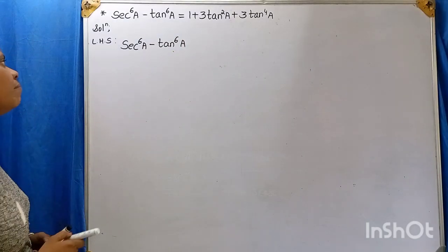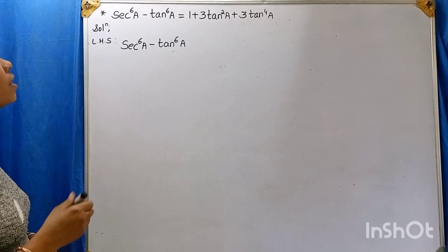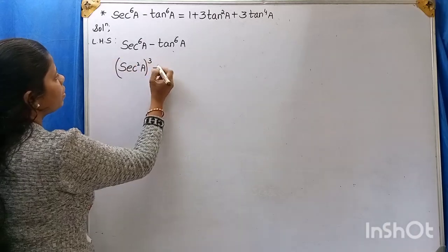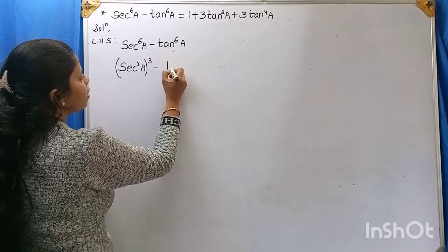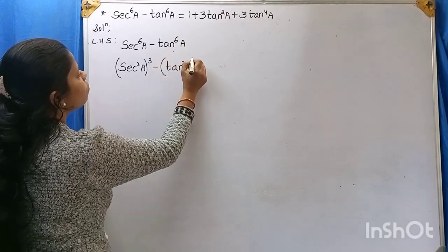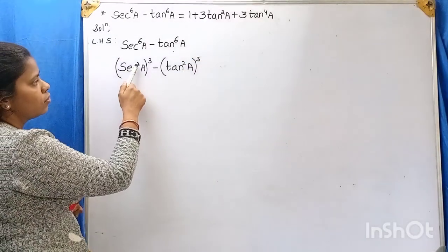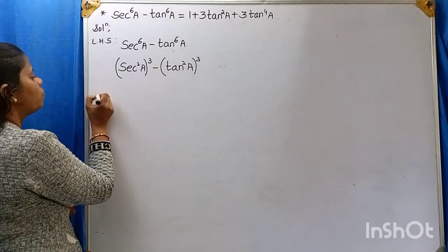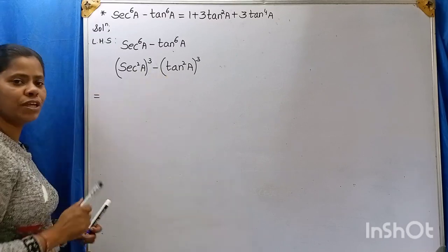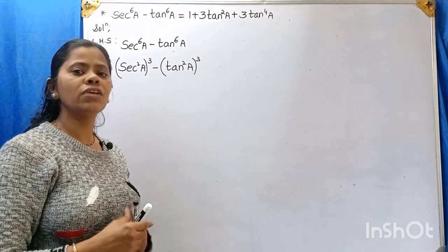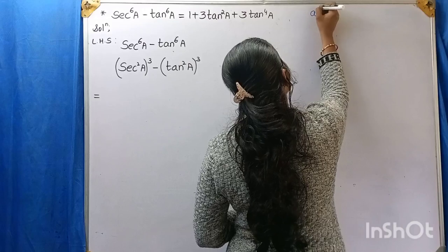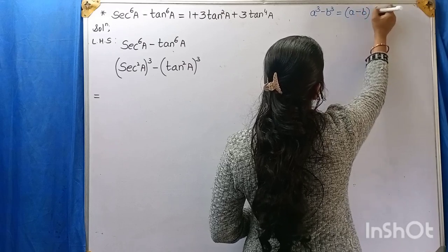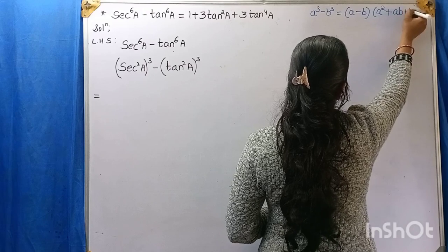Now, secant to the power of 6a can be written as secant squared a, the whole cube. So we have secant squared a, the whole cube, minus tan squared a, the whole cube — because 2 times 3 is 6. Now, it is in the form of a cube minus b cube. We know the formula: a cube minus b cube equals a minus b, into a squared plus ab plus b squared.